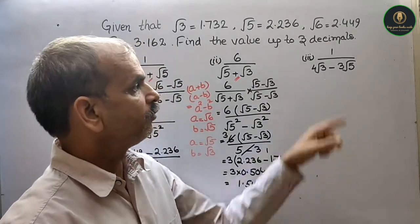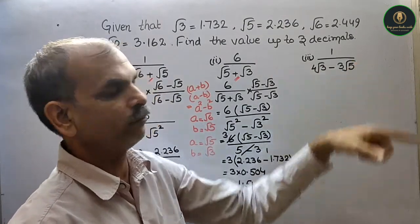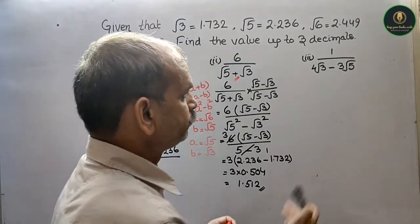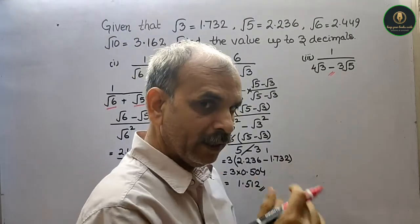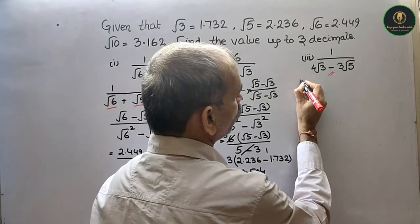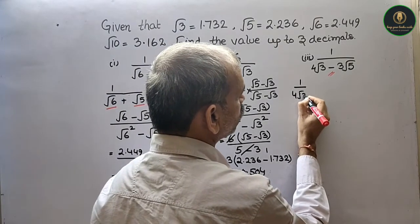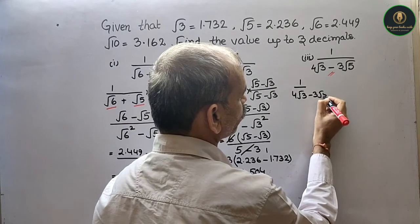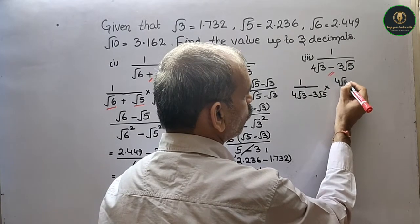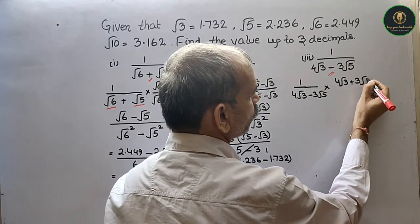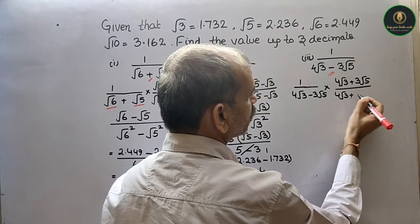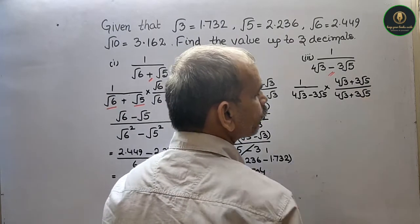यहाँ पर देखो क्या है: 1 by 4 root 3 minus 3 root 5. तो बीच में minus दिया है, तो हम plus के साथ rationalize करेंगे. तो आपका क्या आजाएगा: 1 by 4 root 3 minus 3 root 5, into 4 root 3 plus 3 root 5, by 4 root 3 plus 3 root 5.